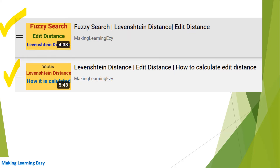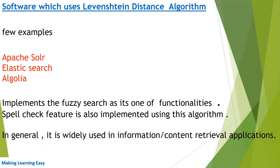I have also attached a screenshot here. Some software which uses the Levenshtein distance algorithm includes Apache Solr, Elasticsearch, and Algolia. These are enterprise search engines which use the Levenshtein distance algorithm to implement functionality related to fuzzy search and spell checking.